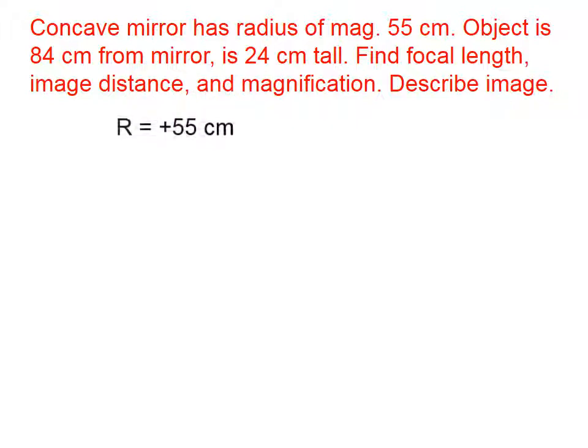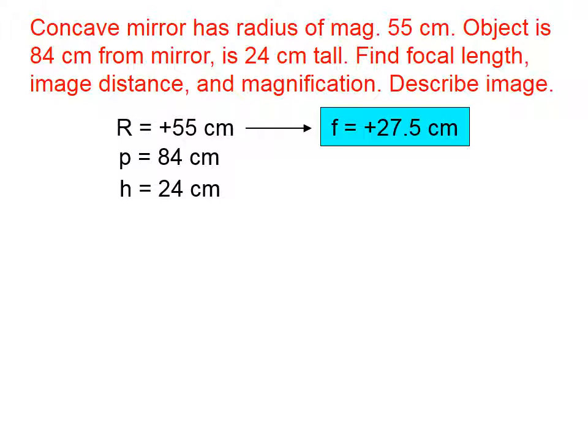Let's do an example. We have a concave mirror that has a radius of magnitude 55 centimeters. Now, we know that that's positive 55, and not negative 55, because we have a concave mirror. And concave mirrors always have positive focal lengths and a positive radius of curvature. The object is 84 centimeters from the mirror, which means the object distance p is 84 centimeters, and the height is 24 centimeters. And we want to find the focal length, the image distance, and the magnification, and we want to describe the image.